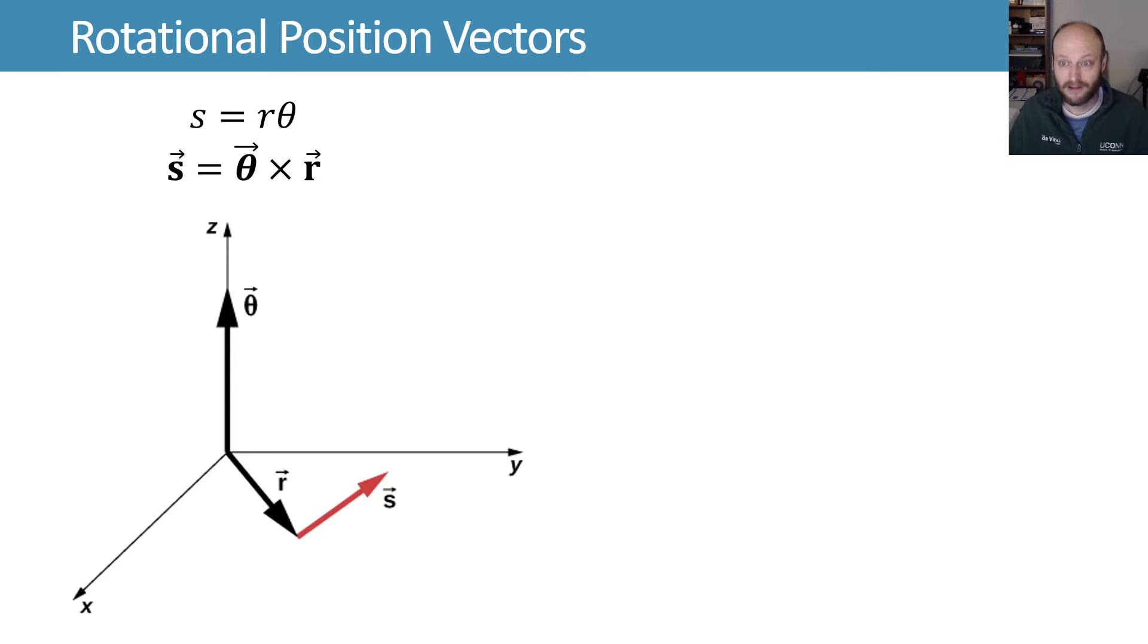That cross product means that we need a way of evaluating what direction we get from that. We're going to introduce or review, if you already know, the right-hand rule to evaluate these cross products.